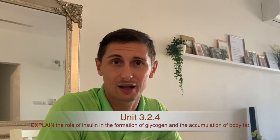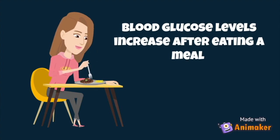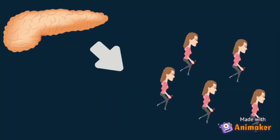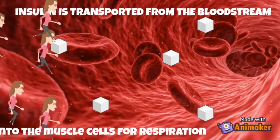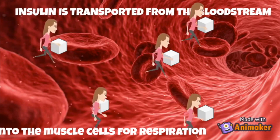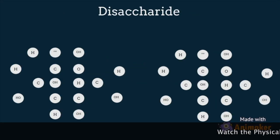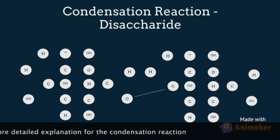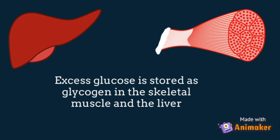In the nutrition video, we spoke about the condensation reaction. Here we need to explain the role of insulin in the formation of glycogen and the accumulation of body fat. When we eat food, our blood glucose levels increase, particularly after eating a carbohydrate-rich meal. Insulin is released by beta cells in the pancreas and travels around the body to cells requiring glucose, telling the cells to open up so that glucose can diffuse from the bloodstream into the cells for respiration. When two glucose molecules combine together, we have a glycosidic bond forming a disaccharide via the condensation reaction, and this excess glucose is stored as glycogen in the muscle and in the liver.